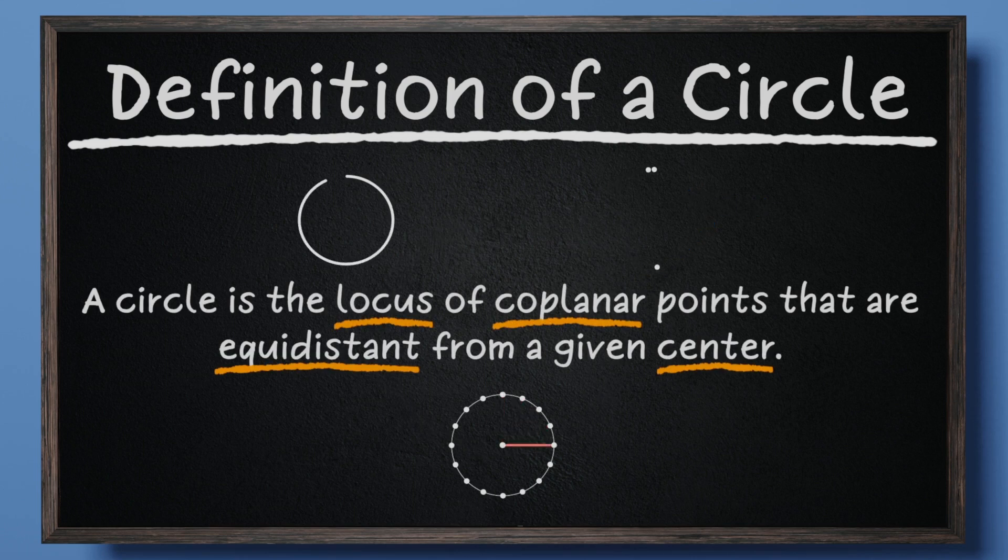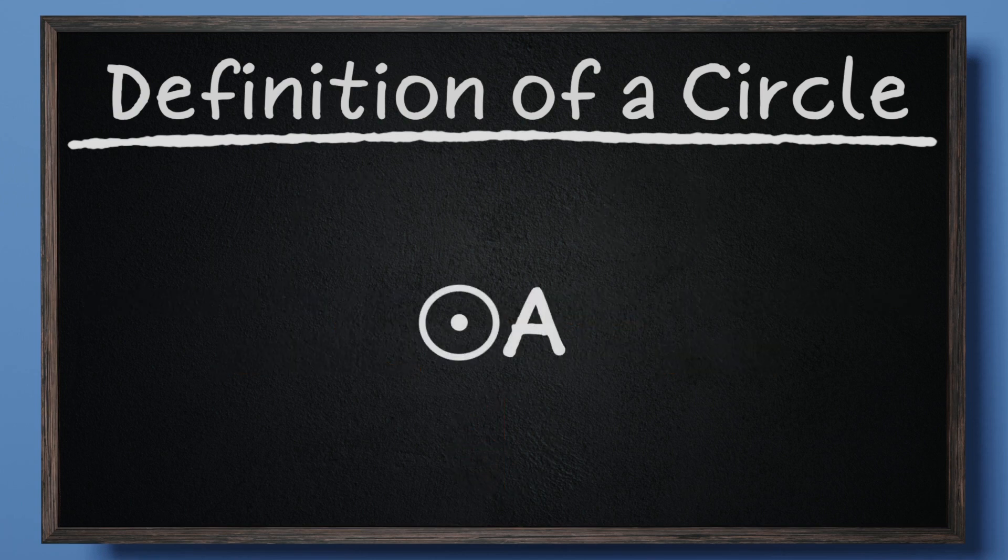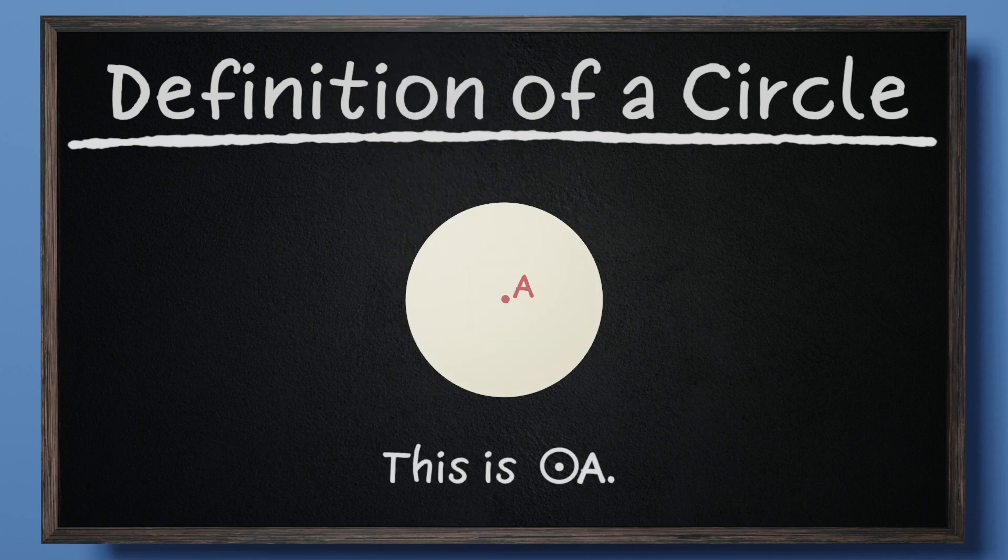Hopefully this makes our definition of a circle easier to understand. Going forward, the symbol we will use when writing about circles is this symbol, which is labeled using the name of the center of the circle. For example, this is circle A.